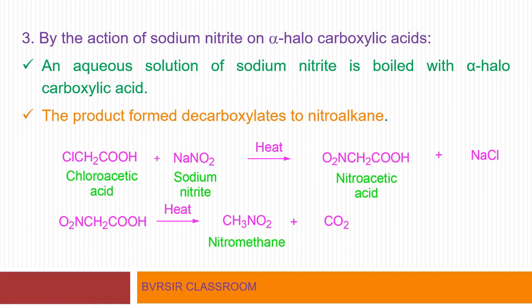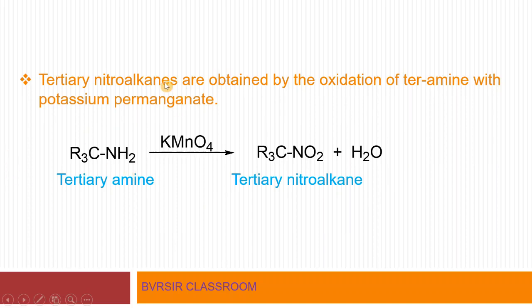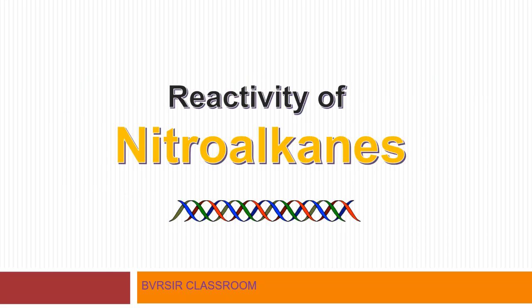We can conveniently prepare nitroalkanes by these methods. Notably, tertiary nitroalkanes cannot be easily prepared by the above methods. A simple method for tertiary nitroalkanes is their preparation by the oxidation of a tertiary amine with potassium permanganate (KMnO4). In this oxidation reaction: R3C–NH2 (tertiary amine) oxidized by aqueous KMnO4 gives tertiary nitroalkanes. This is a convenient method for preparation of tertiary nitroalkanes.